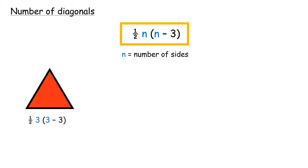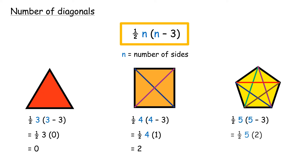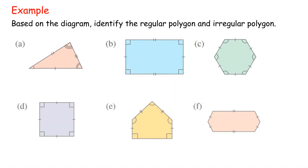The number of diagonals for a triangle is 0. The number of diagonals for a quadrilateral is 2. The number of diagonals for a pentagon is 5. Example: Based on the diagram, identify the regular polygon and irregular polygon.